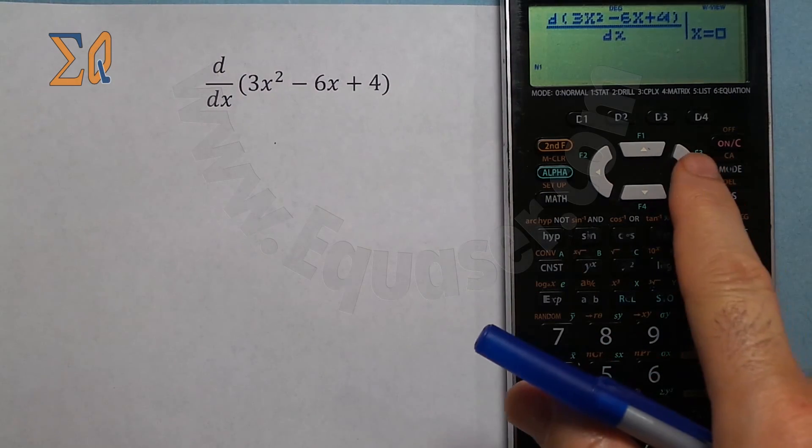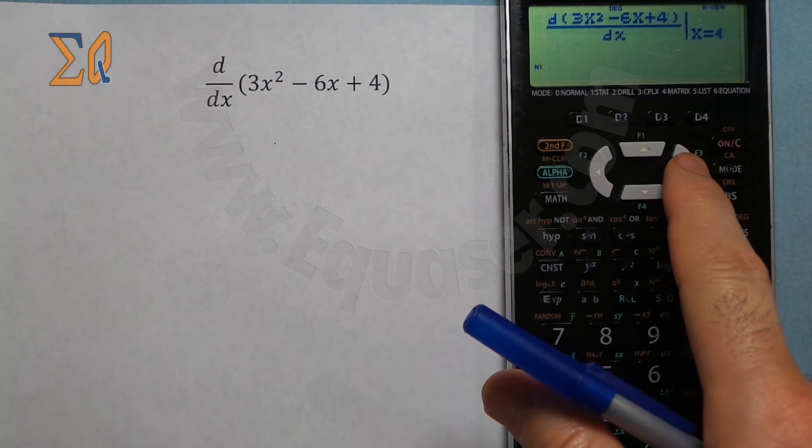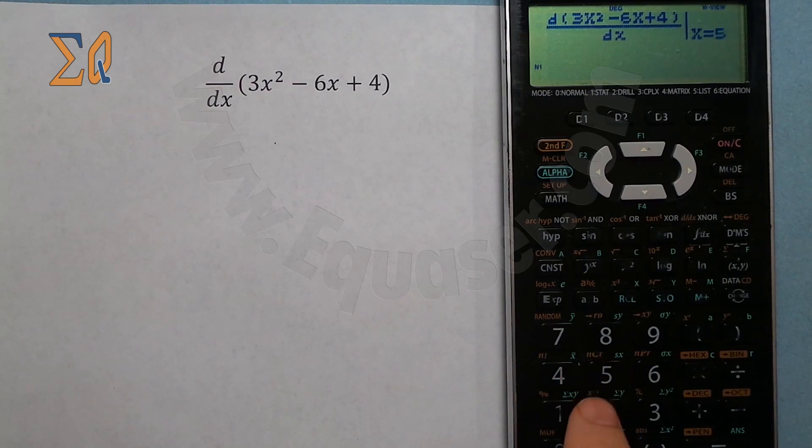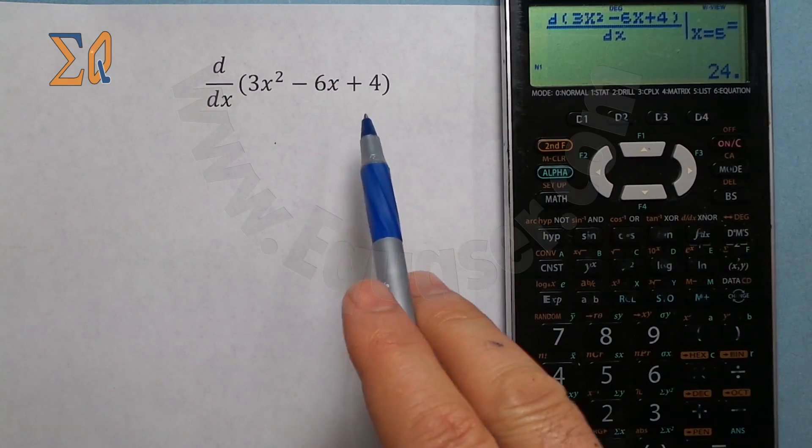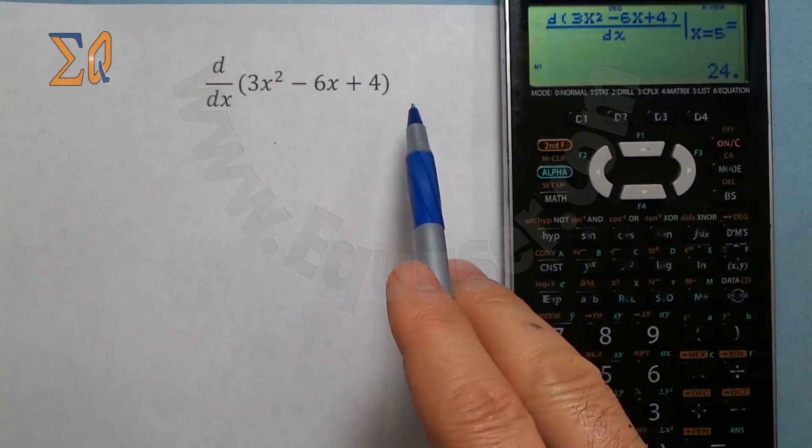Now we want to evaluate it at five. With the right arrow, go to the right, so here at five I press equal sign. The derivative is taken and then five has been entered into that equation, so it's 24.